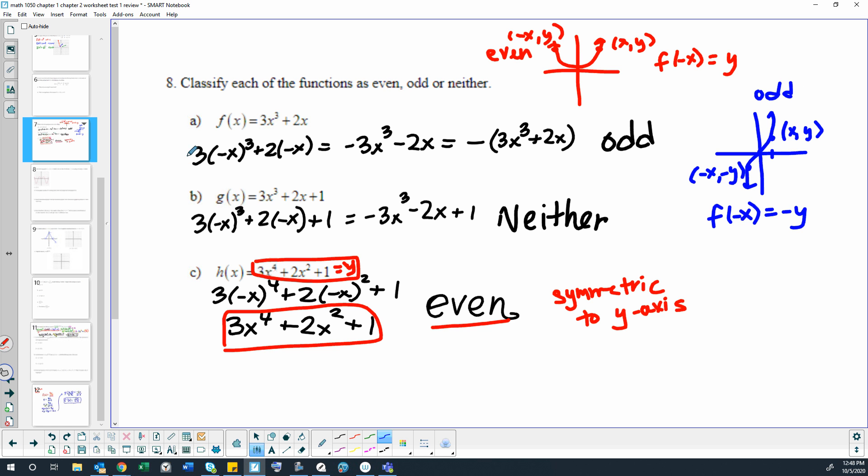Okay, so looking at problem A, we plug in a negative, we get -3x^3 - 2x. I probably didn't have to do this next step, but I just wanted to show that if I take out that negative, inside is my original y value, right, that I started with right here. And so this is the negative of that original y value. It's the entire equation multiplied through by a negative. So that's an odd function with odd symmetry, symmetric to the origin.